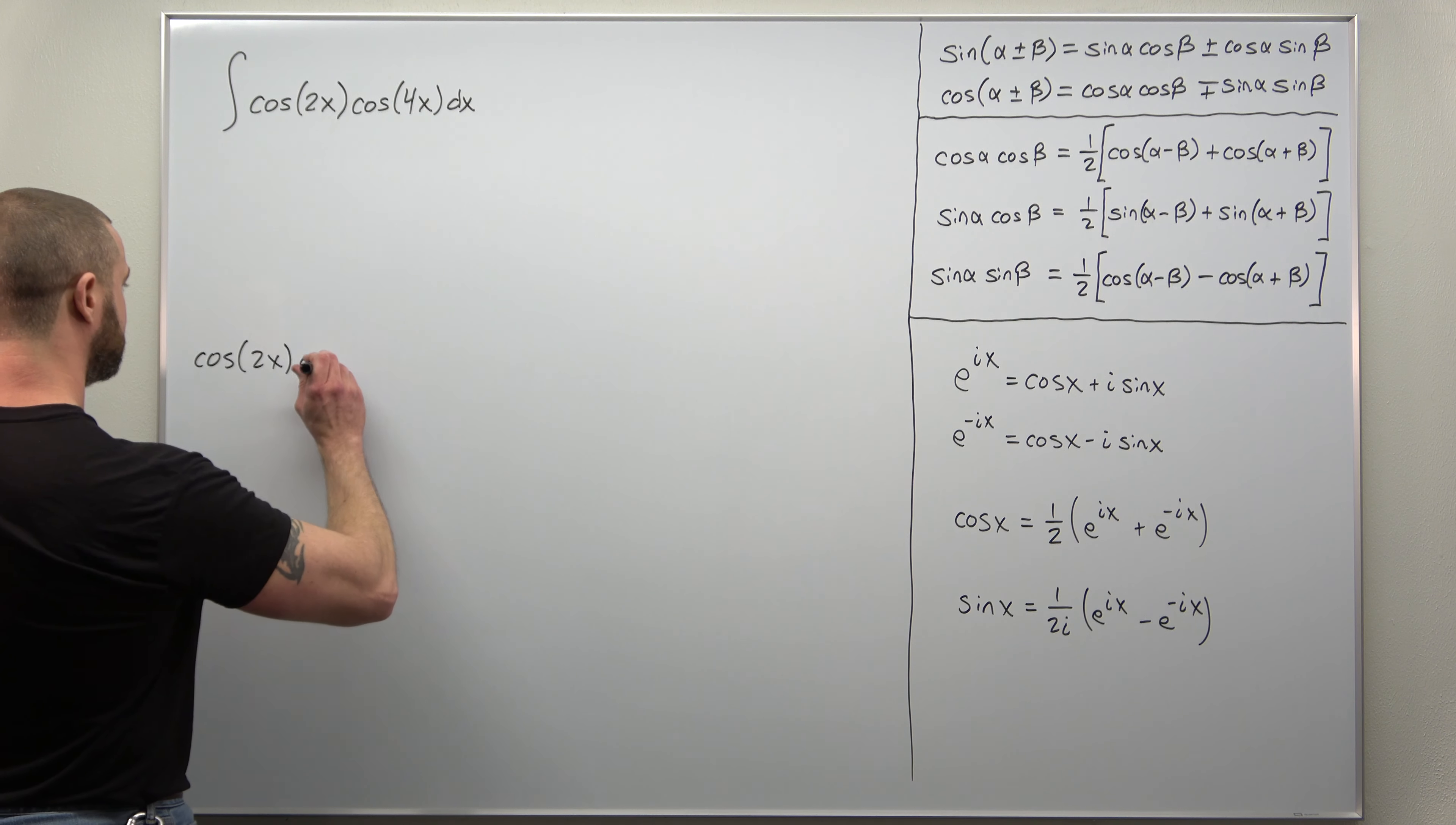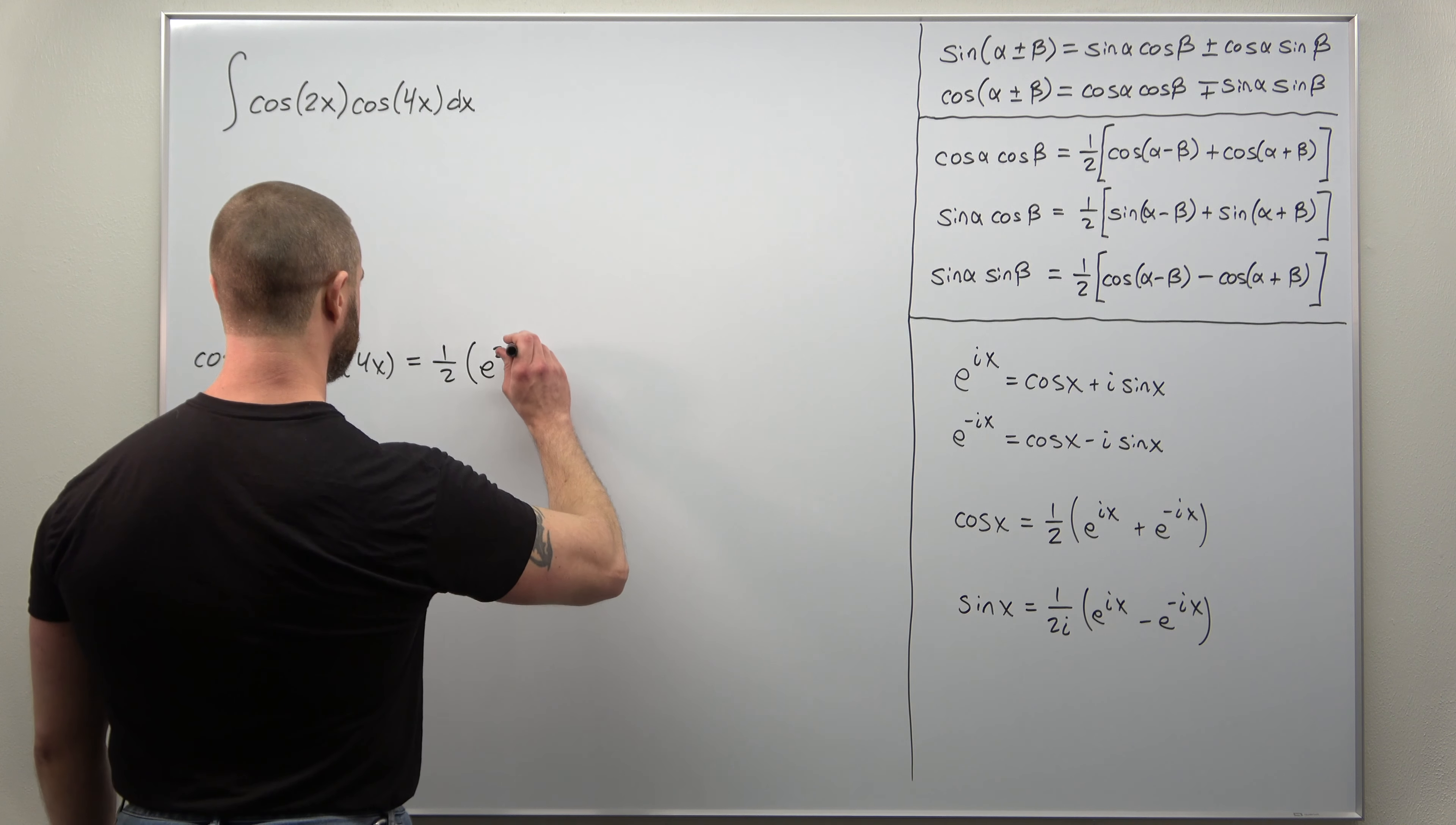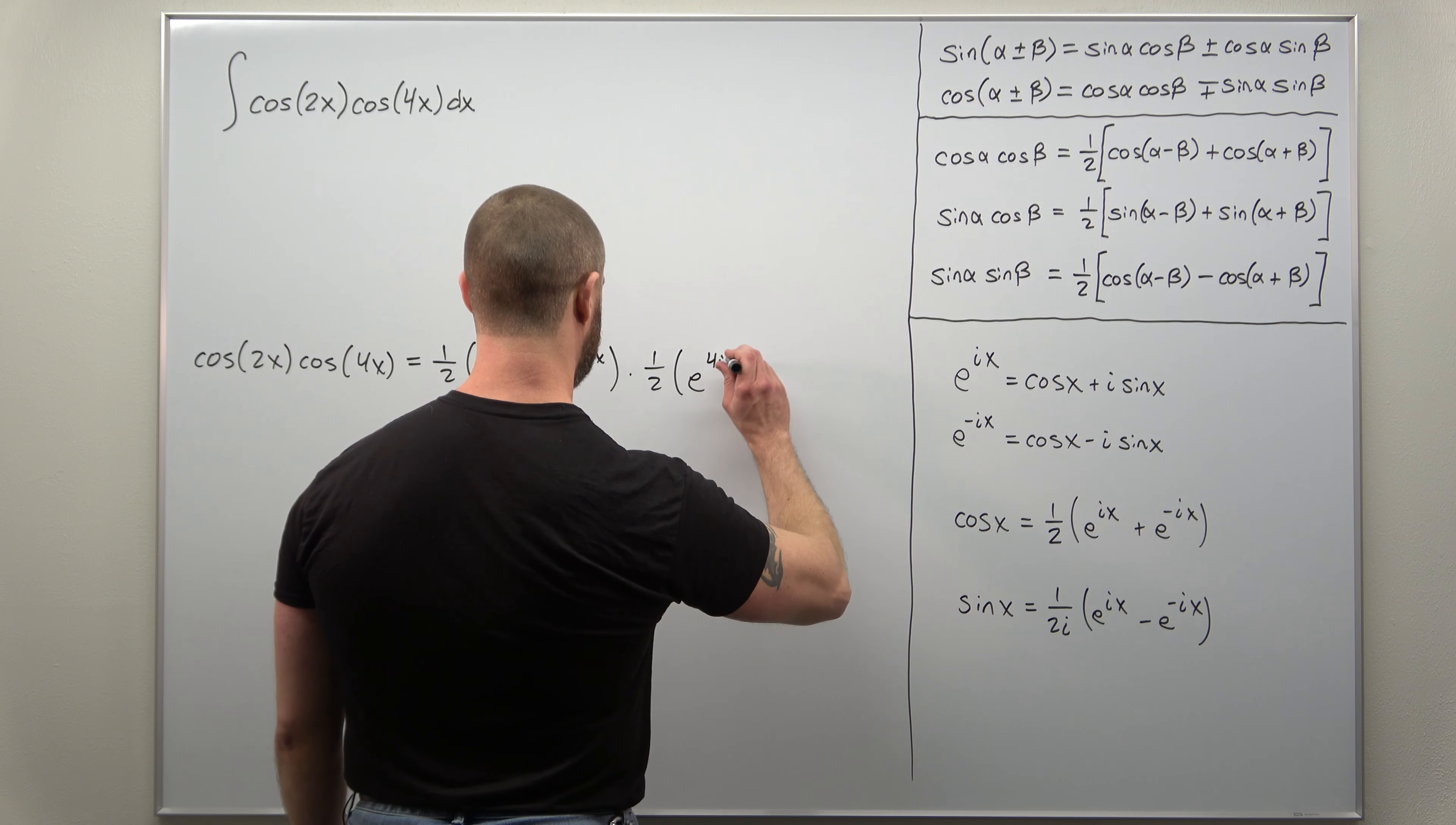Let's go ahead and do that. Cosine of 2x times cosine of 4x. We're going to use this identity twice, once for each cosine term. We get one-half e to the 2ix plus e to the negative 2ix. We apply that identity again to the cosine of 4x term, giving another factor of a half, but now e to the 4ix plus e to the negative 4ix.